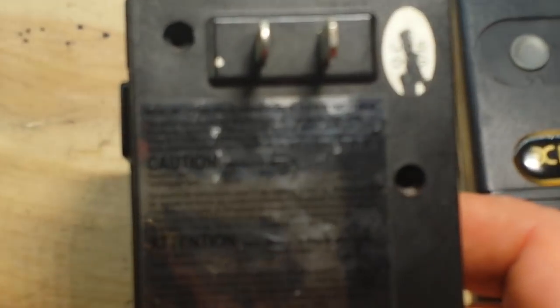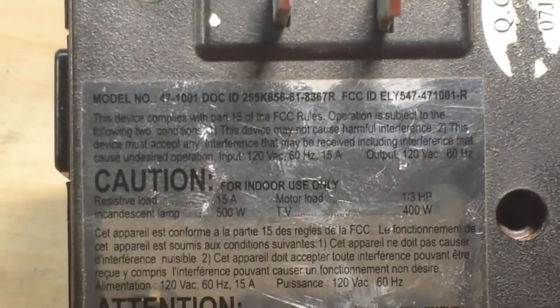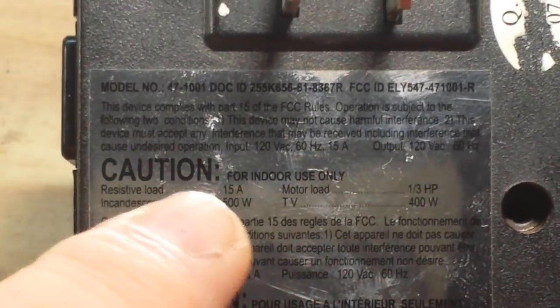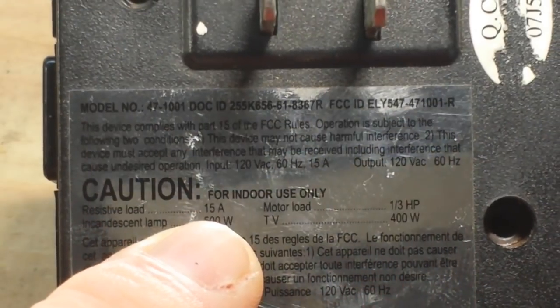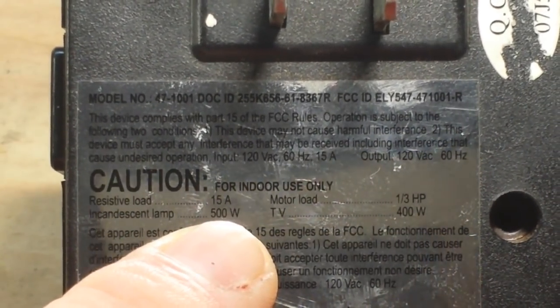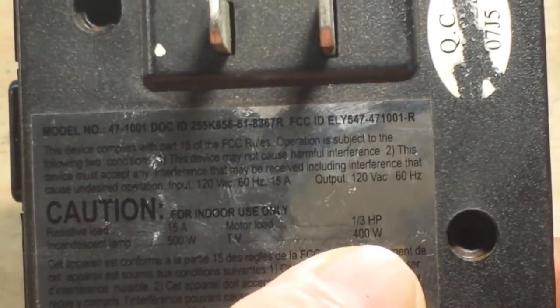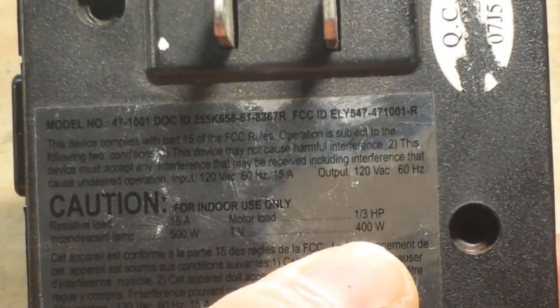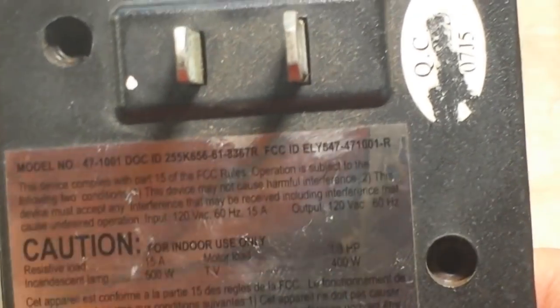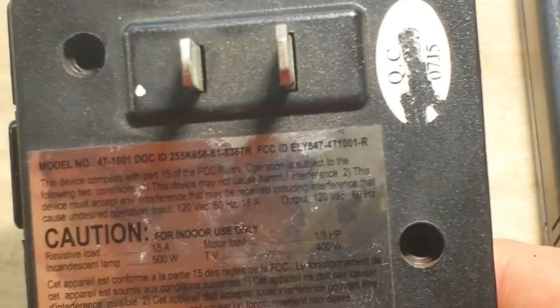If we zoom in here, there's a little bit of information on the back. You can see resistive load 15 amp, incandescent lamp 500 watt, motor load 1/3 horsepower, TV 400 watt. That just gives you an idea of the capacity of these two guys.